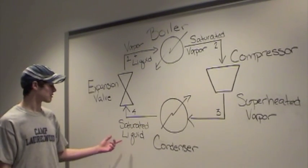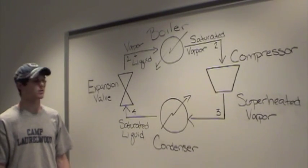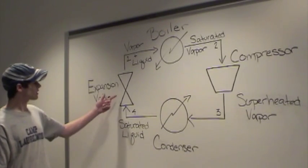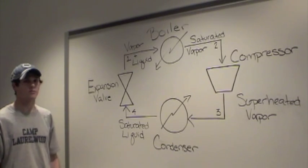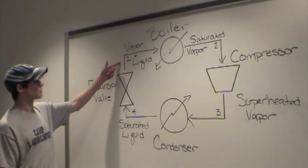Coming out of the condenser, the stream is a saturated liquid. Now, this is pretty much the same as the saturated vapor, it's just all in the liquid phase. And then, this next operation is an expansion valve, which decreases the temperature and the pressure, to get the stream to have the same conditions as it originally had.